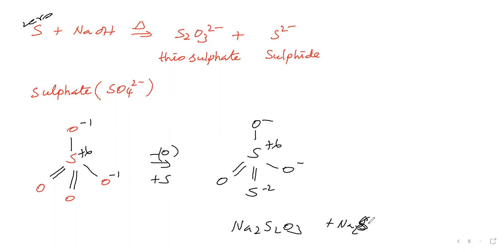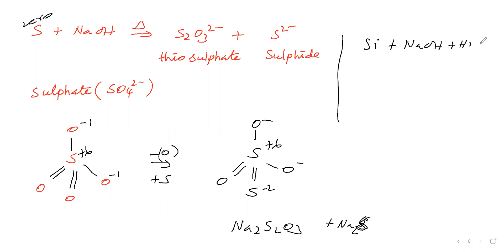Next, non-metal silicon reacting with sodium hydroxide: we take silicon and sodium hydroxide solution, then boil the contents.